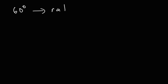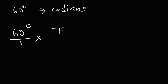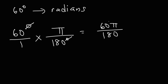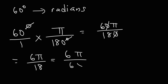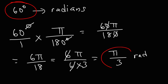Let's try another example: convert 60 degrees to radians. Start with 60 degrees and multiply by pi over 180 degrees. These units cancel, giving us 60 pi divided by 180. Cancel a zero to get 6 pi over 18. Rewriting 18 as 6 times 3, we can cancel the 6, and thus we get pi over 3 radians. So 60 degrees is equal to pi over 3.